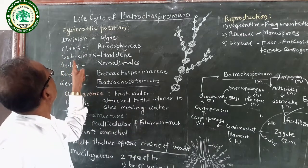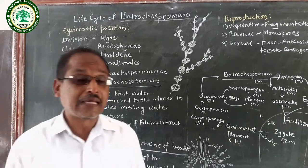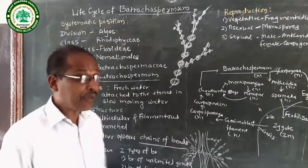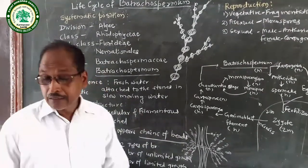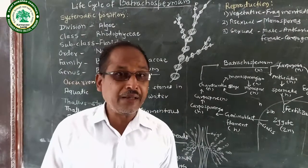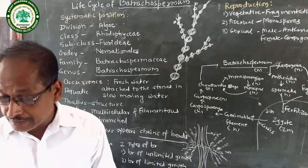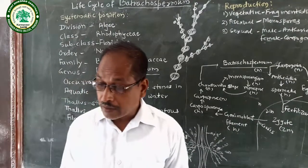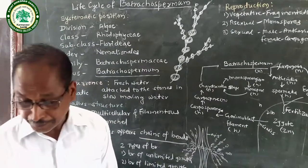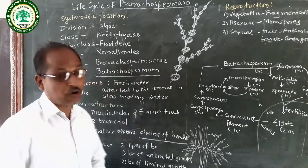In Subclass Florideae, the thallus structure is filamentous. The character of Order Nemalionales is that the thallus is filamentous, and it may be uniaxial or multiaxial.